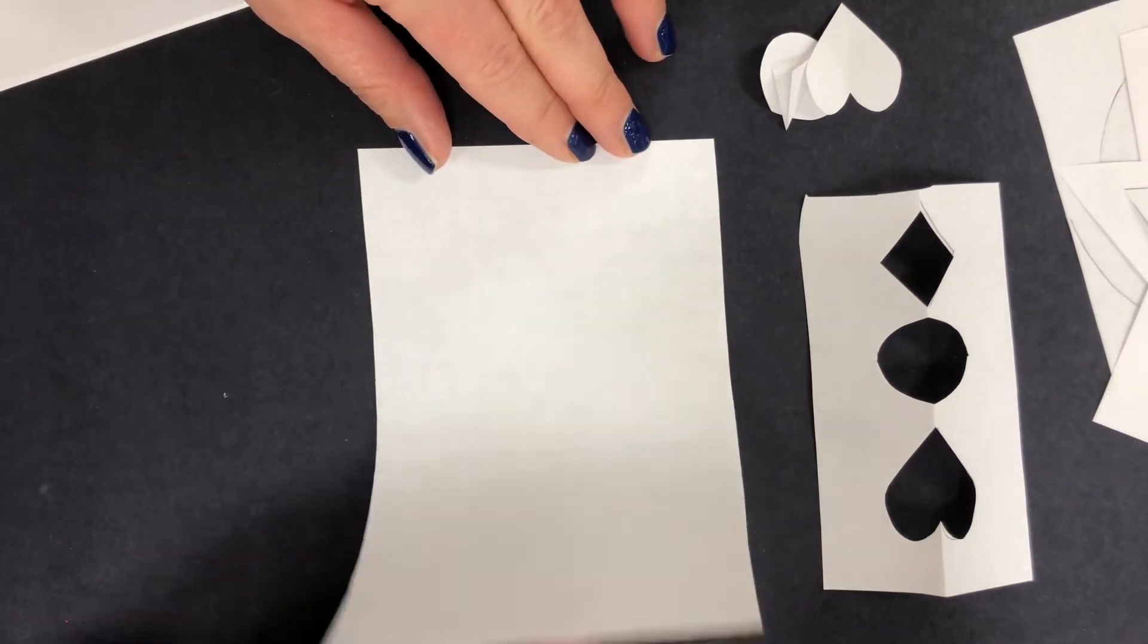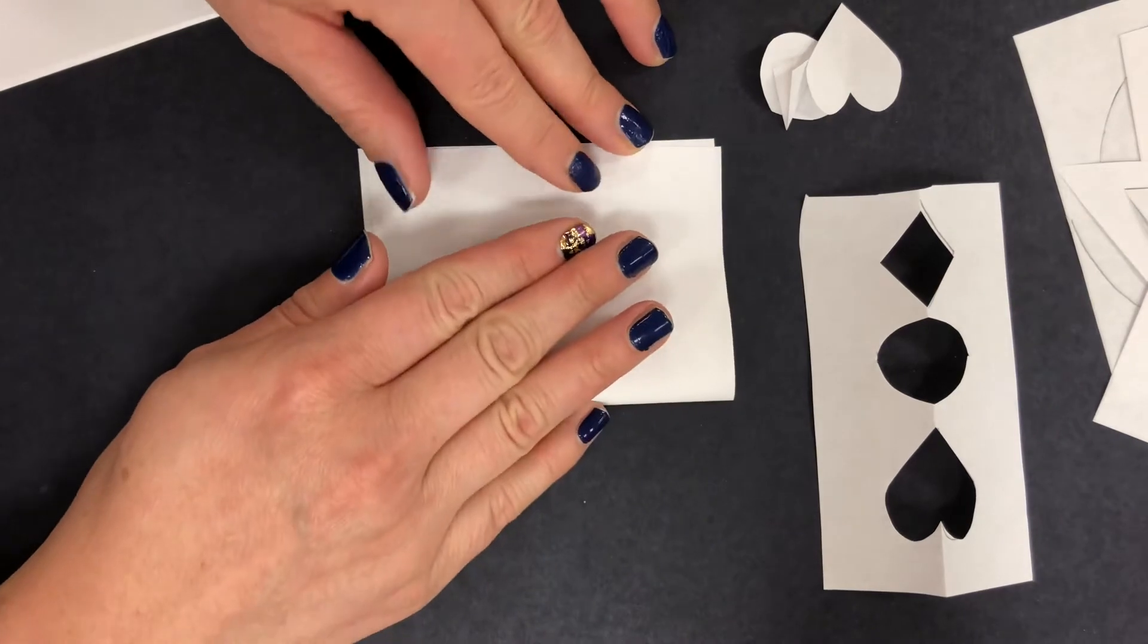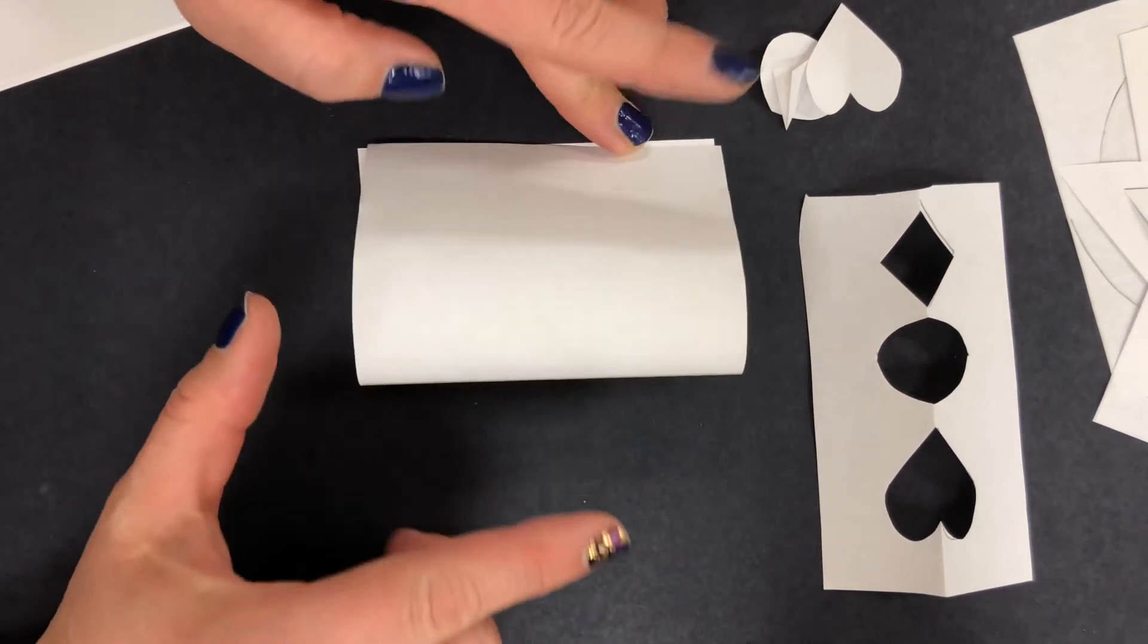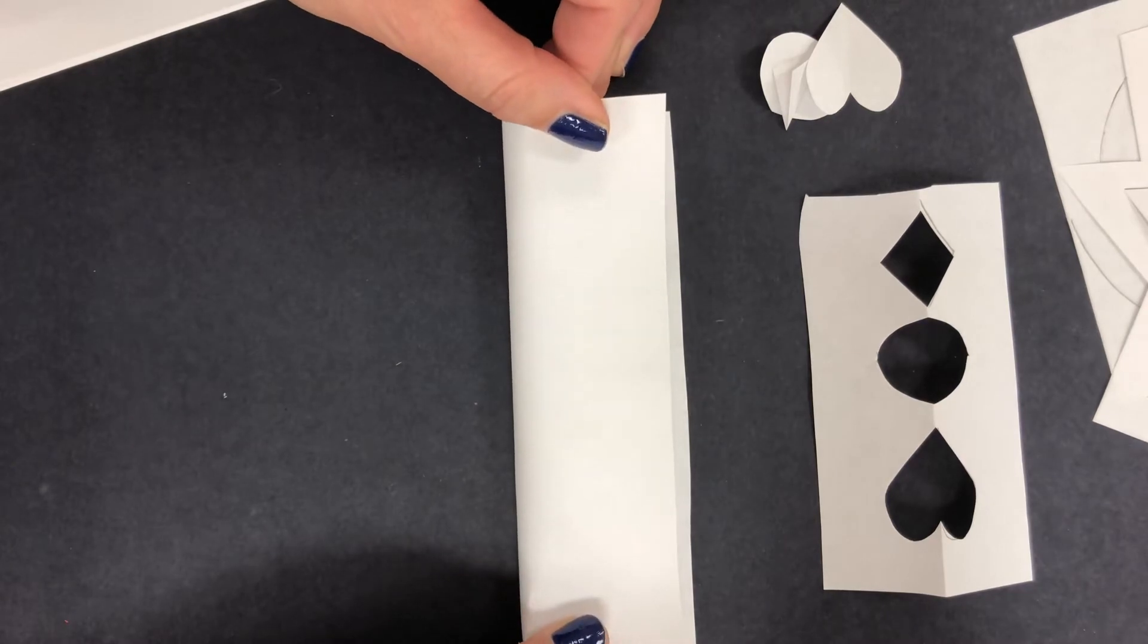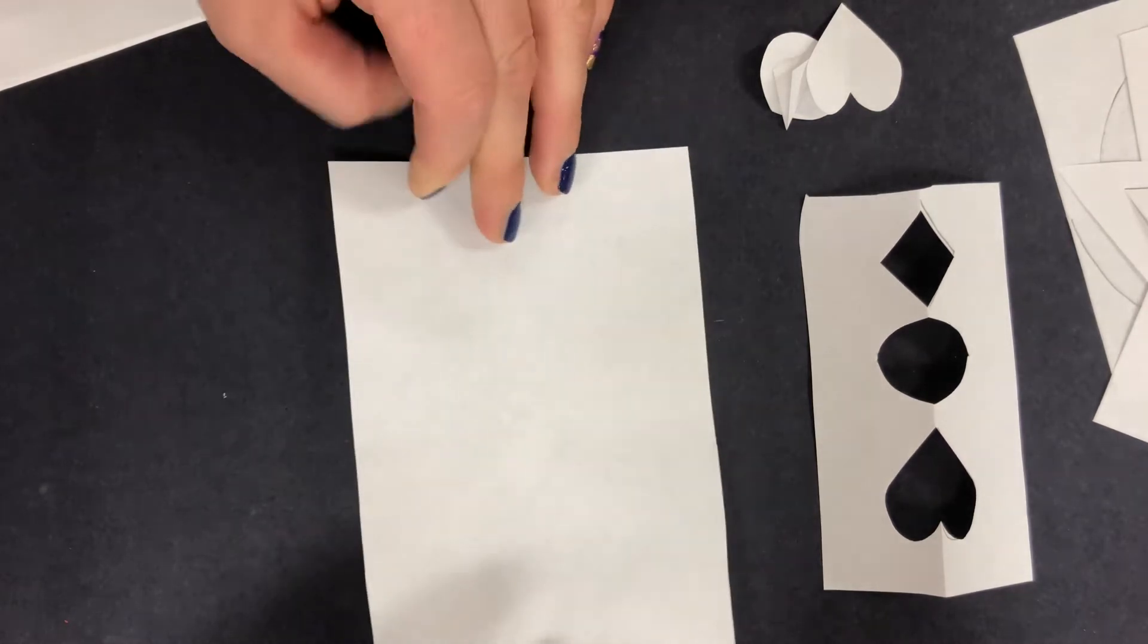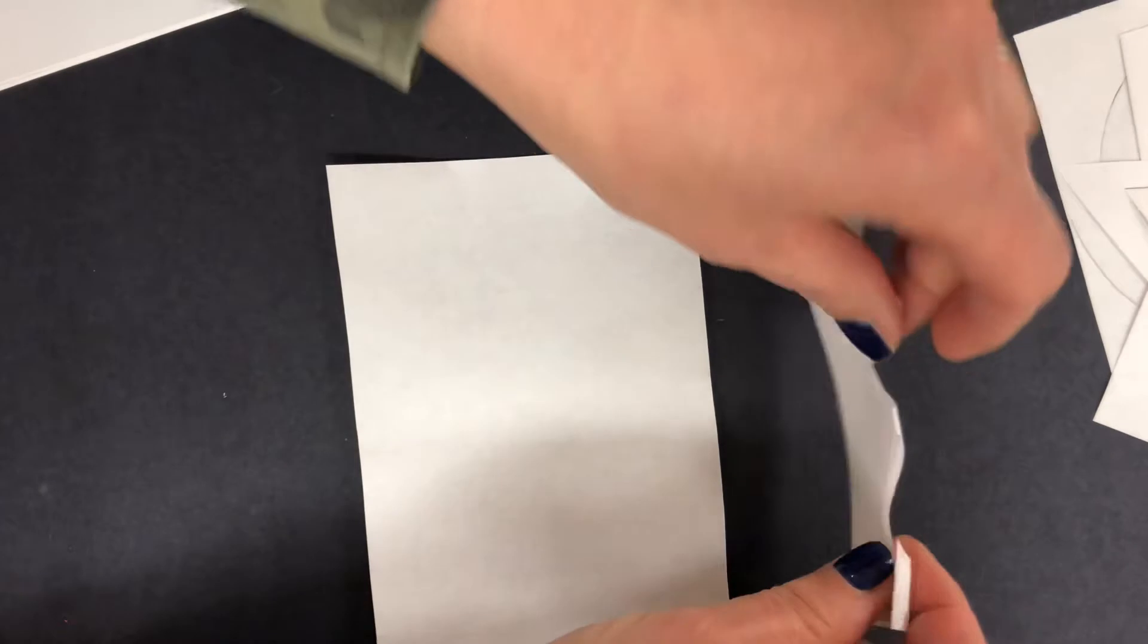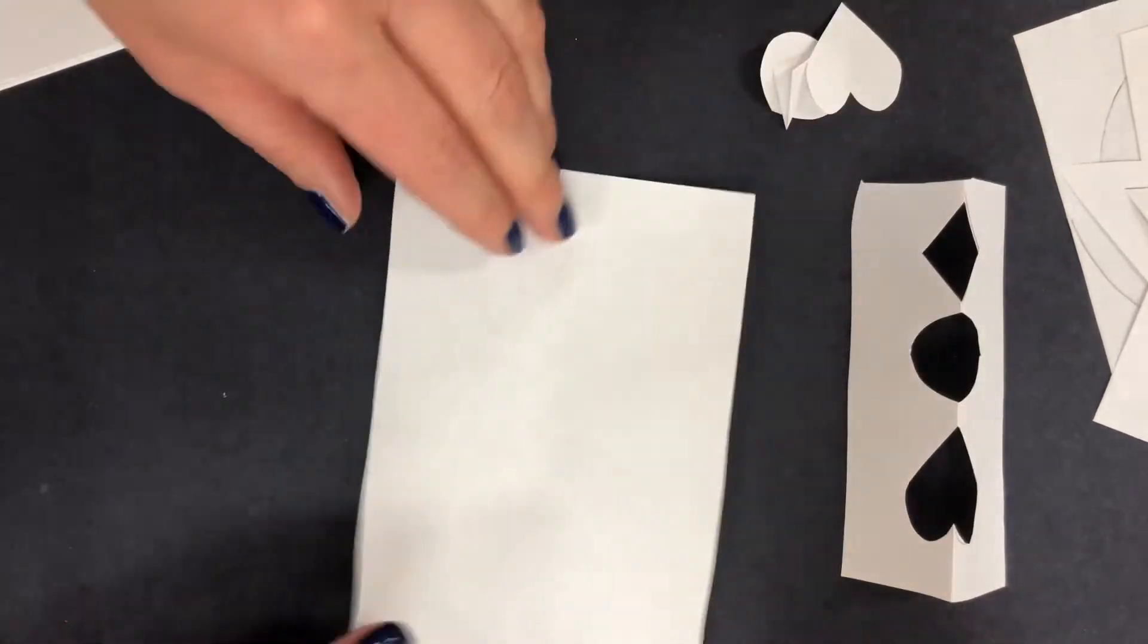You can fold it the fat way, like hamburger style, or you can fold it the skinny way, hot dog style. Your choice depends on what you want to cut out. This one I folded skinny ways, so on my next one I'm going to try it the other way.